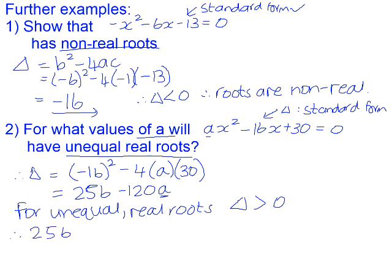Therefore, in this case, because the discriminant is 256 - 120a, we know that needs to be greater than zero. If we solve for a, I'm going to add 120a to both sides, and divide both sides by 120. That simplifies.